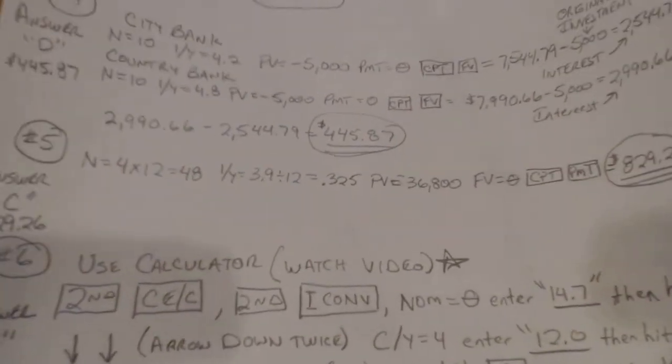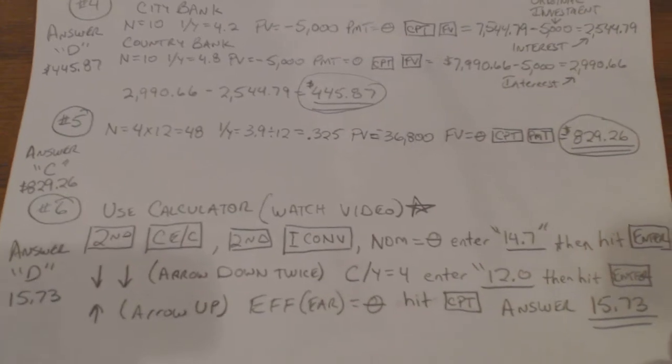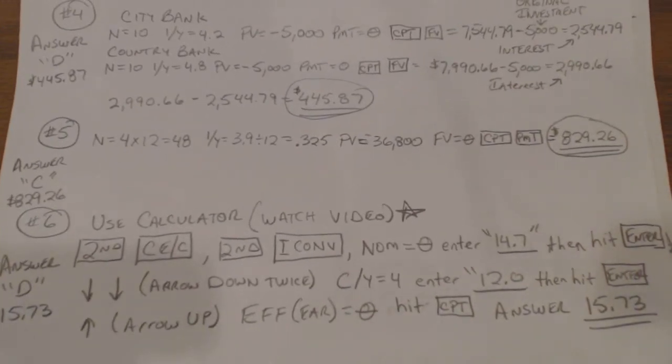Number six. I'll read this problem and we'll go over it because this is a function on your calculator and it really helps you out. Problem number six says Alice Bank is offering you a credit card with an annual percentage rate of 14.7%. Remember that annual means, for instance, if you wanted to get what that was on a monthly basis, it's just 14.7 divided by 12. There's no compounding with annual.